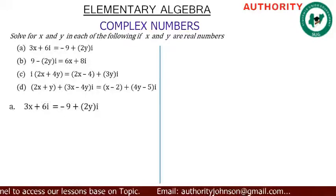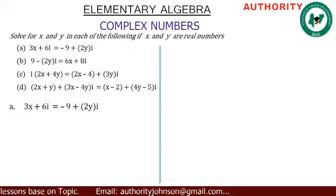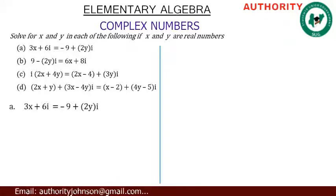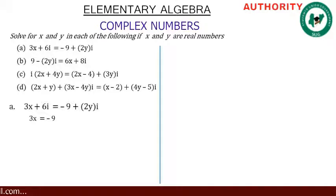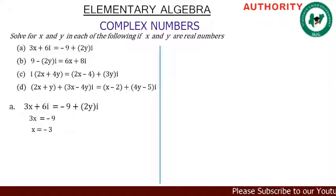In the expression 3x plus 6i equals minus 9 plus 2yi, the real part on the left-hand side is 3x, and the real part on the right-hand side is minus 9. So 3x equals minus 9. Dividing both sides by 3 gives x equals minus 3.